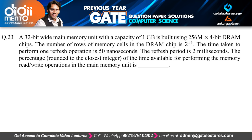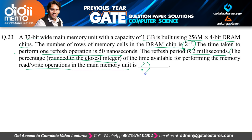Question 23: a 32-bit wide main memory with capacity 1 GB is built using 256M×4-bit DRAM chips. The number of rows of memory cells in the DRAM chip is 2^14. One refresh operation takes 50 nanoseconds, the refresh period is 2 milliseconds. We need the percentage of time available for memory read/write operations, rounded to the nearest integer.